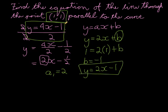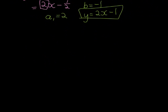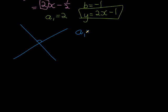Instead of parallel, they might say the line is perpendicular — meaning the two lines make a 90-degree angle. In that case, if you multiply the gradient you're looking for (a1) by the given perpendicular gradient, the answer is always -1. That is: a1 × a2 = -1.